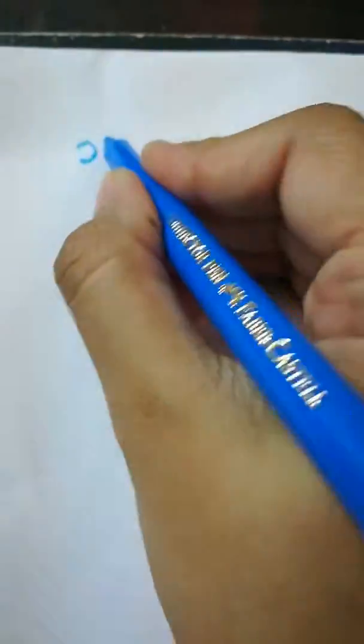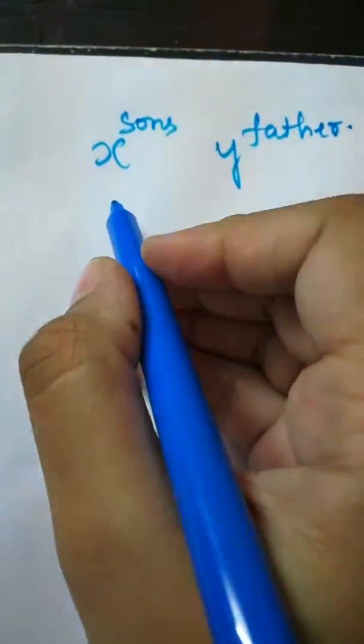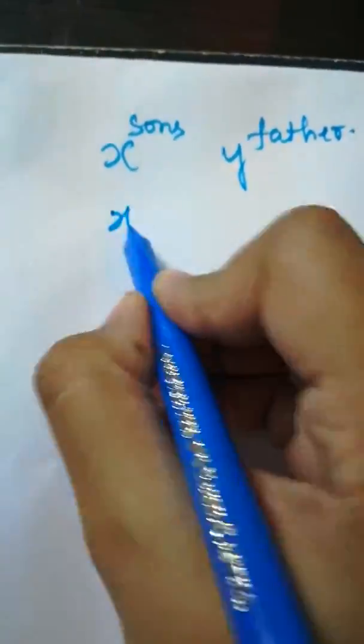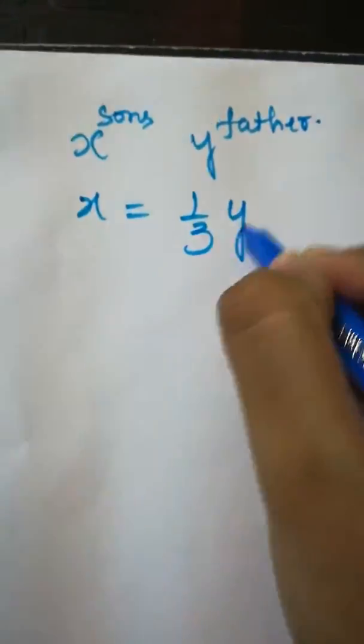So let us consider X be son's age and Y be father's age. The first statement says my son's age is one third of my age. So X, son's age, is one third of father's age.